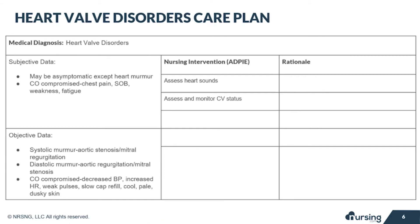Let's review the nursing interventions for heart valve disorders. Assessing heart sounds is critical in these patients and is the easiest way for a nurse to identify a valve disorder. A murmur indicates turbulent or abnormal blood flow through the valve. Remember, if a valve should be open but doesn't open fully, this is stenosis; if a valve should be closed but isn't, this is regurgitation. To identify a murmur, determine if it is S1 or S2, which valve you are listening to, and what the valve should be doing at that time.